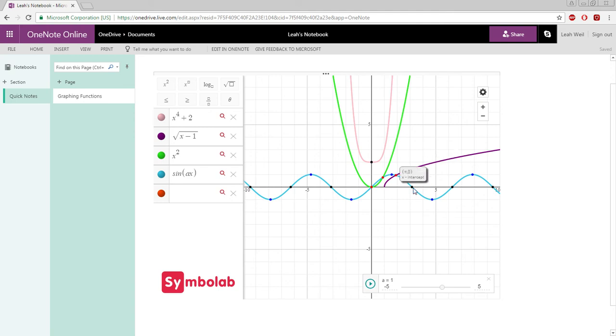The black points show the axes intercepts, the blue points show the extreme points, and the red points show the function intercepts.